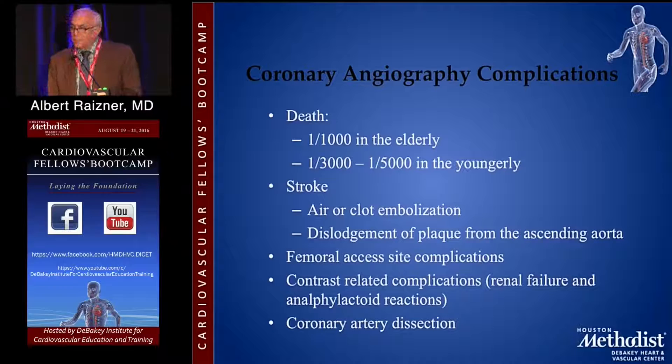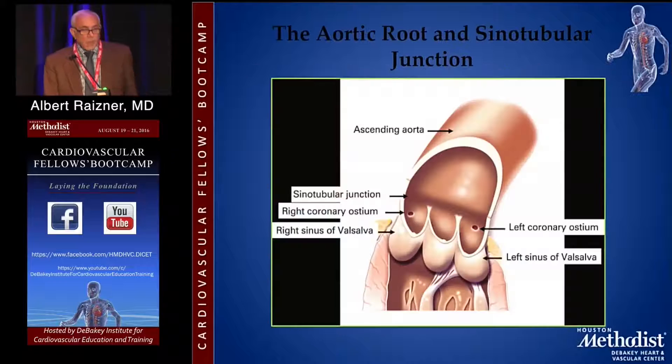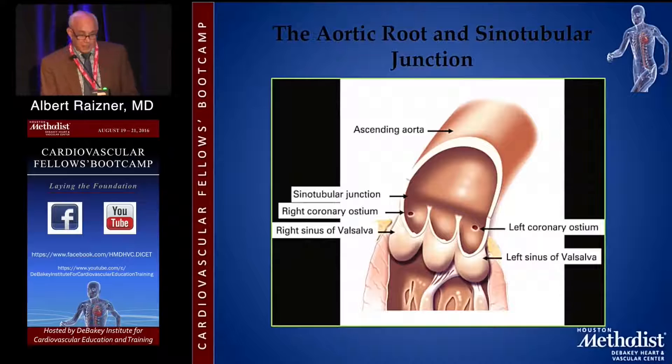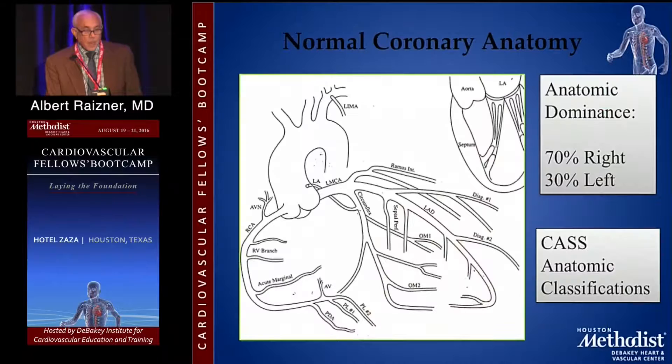Most catheters have a rubbery tip, which makes them nice and gentle on the coronary arteries. It's important to know, and it's fortunate, that the aortic root is a fairly simple structure. You have three sinuses of Valsalva and three cusps. In most patients, the right coronary originates from the right, the left from the left. If you could find a coronary artery in the non-coronary cusp, you could report it and get it published immediately — there has never been one reported. It's truly a well-named structure, the non-coronary cusp.